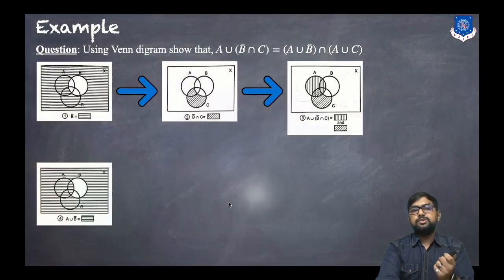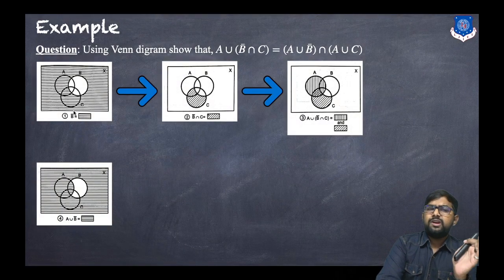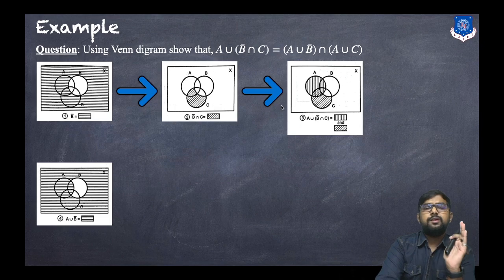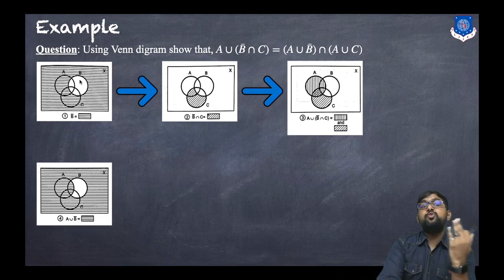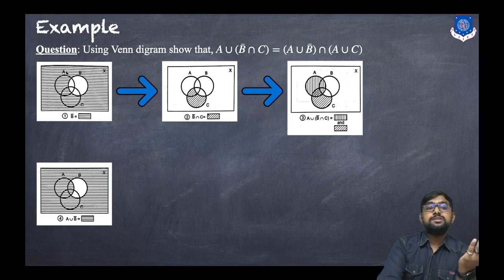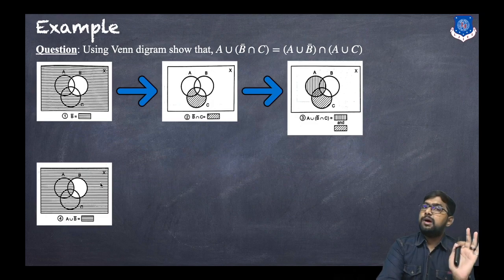For the right-hand side, the first step: we already calculated B̄, so now A ∪ B̄ means B̄ union with the A portion. That shaded part is A ∪ B̄.